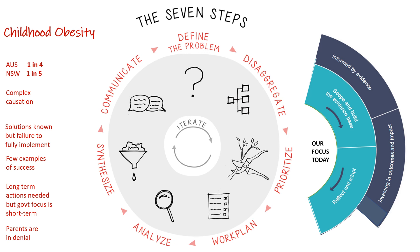We have started to look at the problem definition of childhood obesity and summarised the evidence. This takes us some way towards defining the problem, one part of our seven steps. Now it's time to reflect and adapt the work for the Paul Ramsey Foundation to think about investment in outcomes and impact to make a difference. Thanks for your attention.